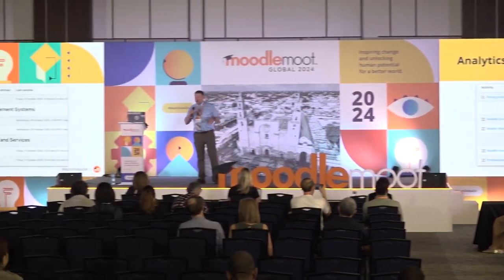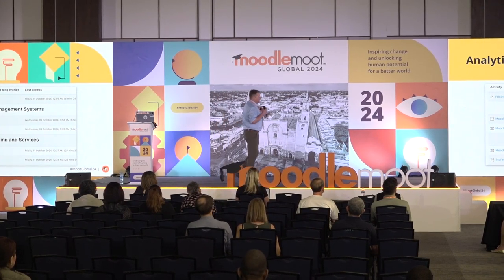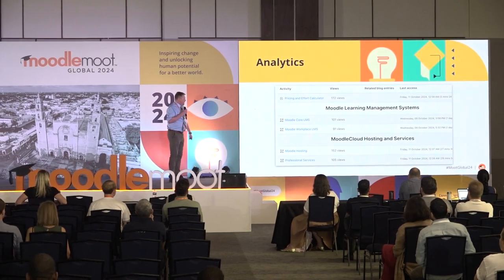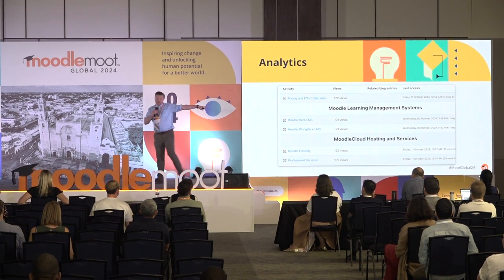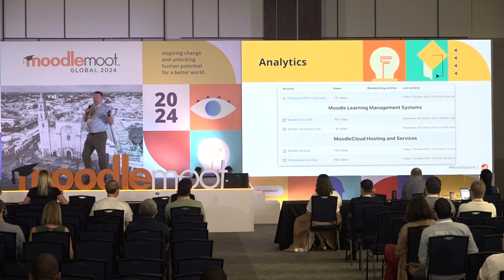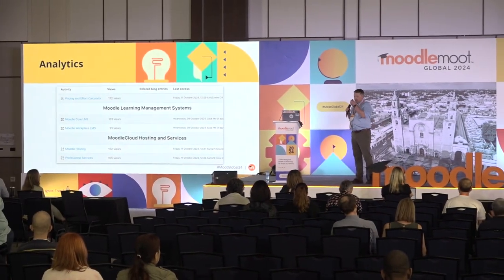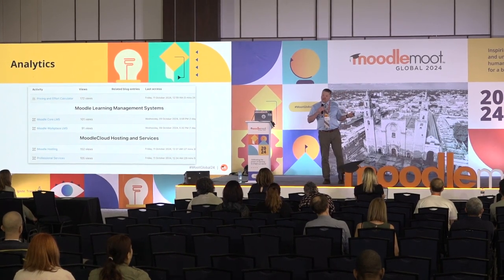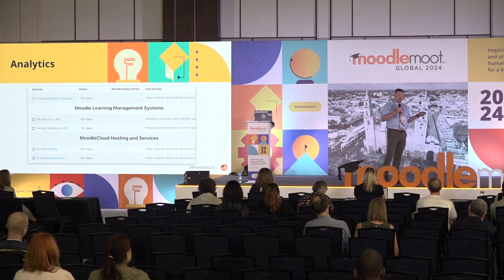This is the overall course report — again, a report already built into Moodle. It's telling me how many people have viewed each item, how many times, and when the last access was. Far and away, the pricing and effort calculator is the most popular thing there — that makes a lot of sense. The next most common is the Moodle hosting lesson. That's valuable insight about the customer that I can use to drive how I build my interactions with them, how I talk to them, and how I advertise to their particular demographics.